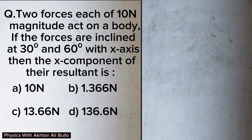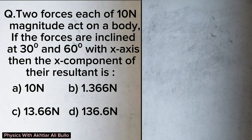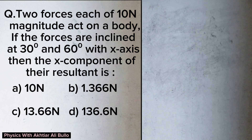The question is: two forces, each of 10N magnitude, act on a body. If the forces are inclined at 30 degrees and 60 degrees with the X-axis, then the X component of their resultant is: a) 10N, b) 1.366N, c) 13.66N, d) 136.6N.